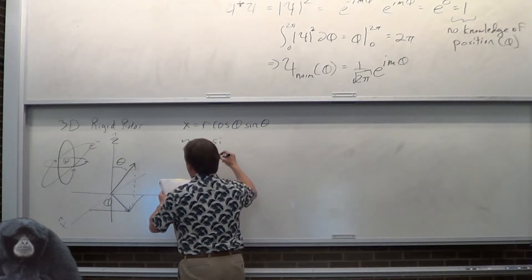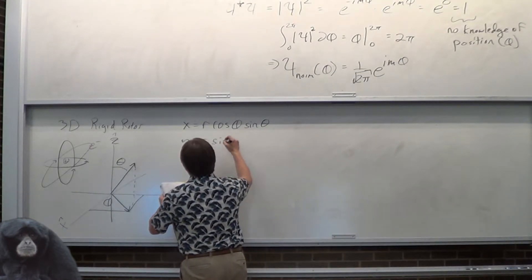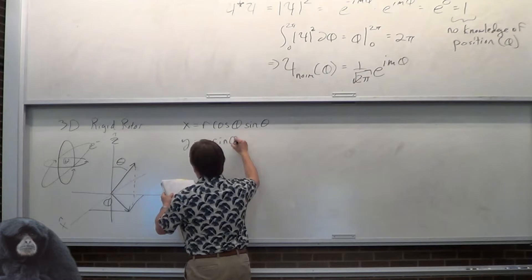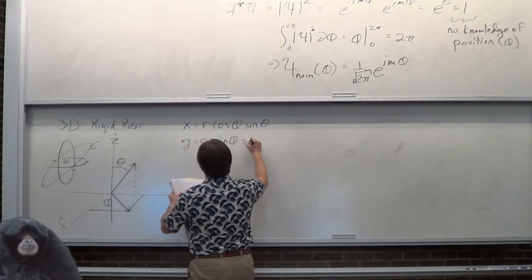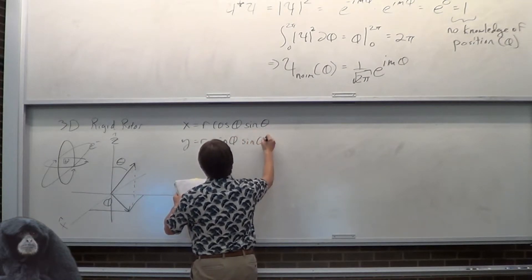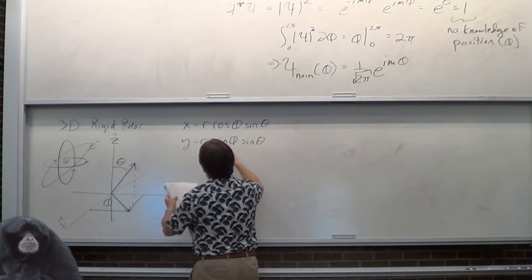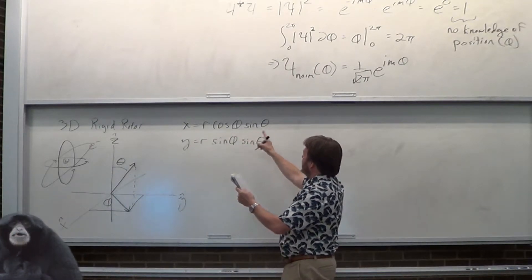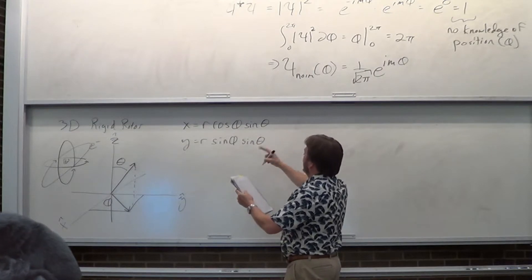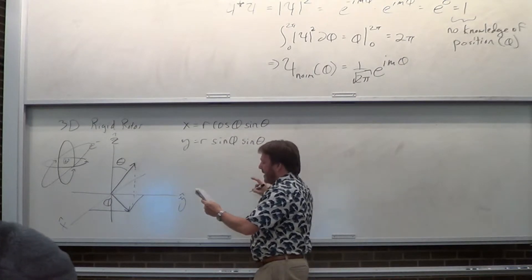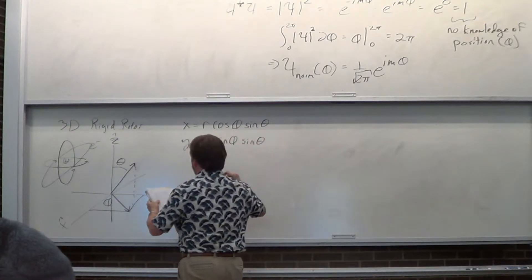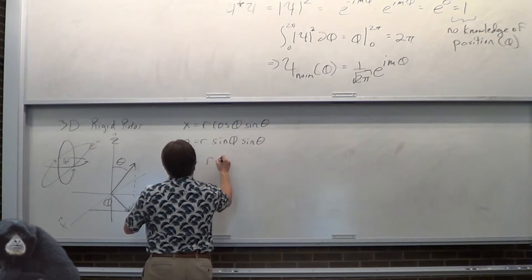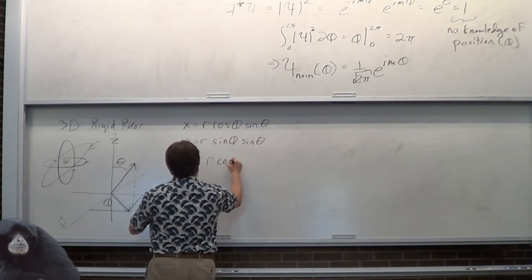You've done spherical coordinates — maybe sophomore year of high school. X equals r·sinθ·cosφ, Y equals r·sinθ·sinφ — Y is always kind of different — and Z is always the easy one: r·cosθ.